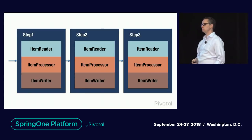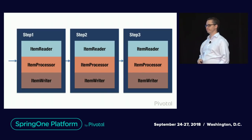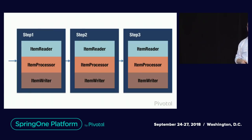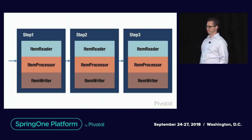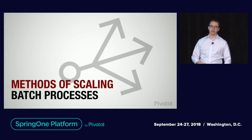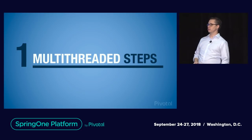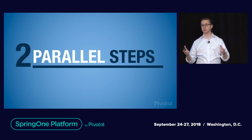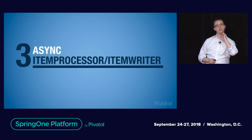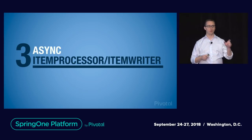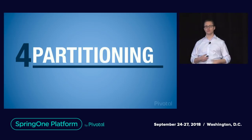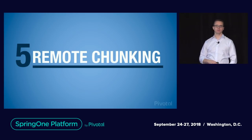There are five different methods to scaling Spring Batch applications: multi-threaded steps, where we execute each chunk in its own thread; parallel steps, where we run multiple steps in parallel; async item processor and async item writer, used together to execute the processing piece in parallel with the reader and writer being synchronous; partitioning, which if you're familiar with Kafka is pretty much the same concept; and finally, remote chunking. We're going to walk through all of these in much more detail.